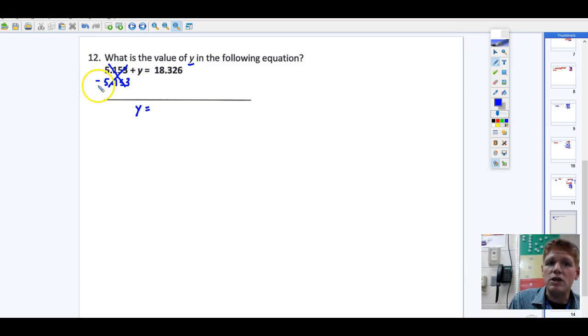But whatever I do to the left side - I use my inverse operation of subtraction - I have to do to the right side. So I've got to subtract 5.153 from this side.